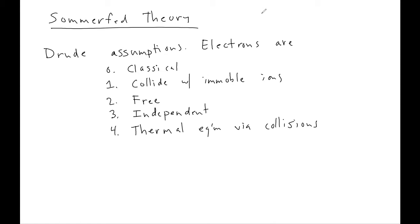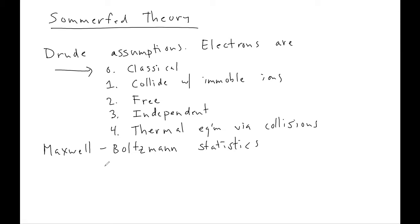Today we're going to focus on assumption zero. We're going to think about how we should take the first steps toward treating electrons quantum mechanically. One way to think about assumption zero is that the Drude model assumes that the electrons obey Maxwell-Boltzmann statistics, which is to say we assume in the Drude model that the distribution of electronic velocities v has the following form.